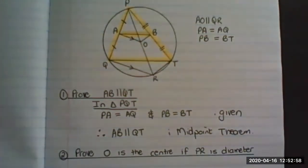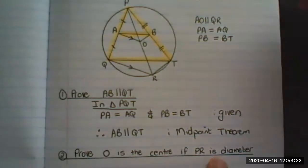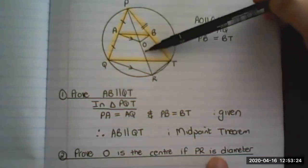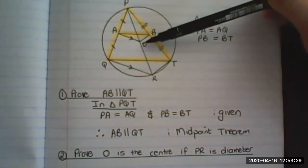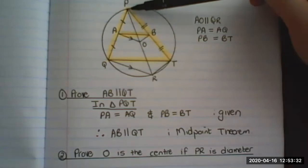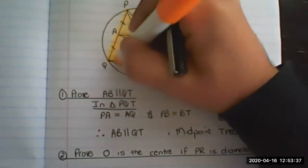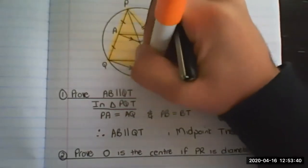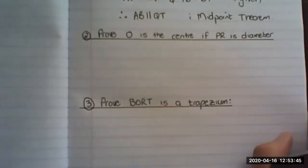And that is it. Short, sweet, simple. The next question is prove that O is the center of the circle if PR is the diameter. So they say that PR is the diameter, and now you need to prove that that's the center of the circle. It's very simple to prove that because we are going to look at triangle PQR. So let me show you how to write it.